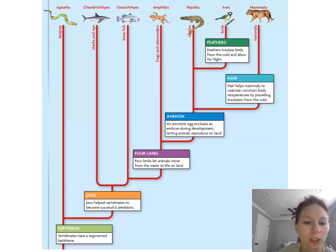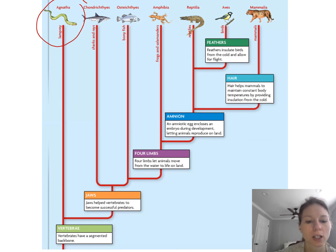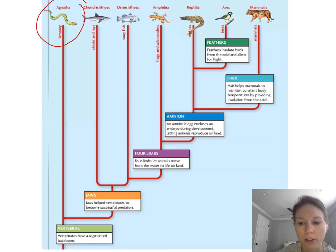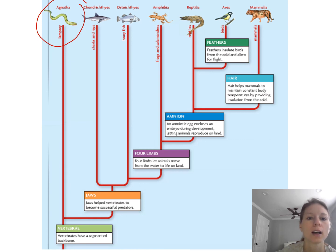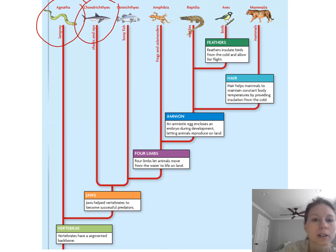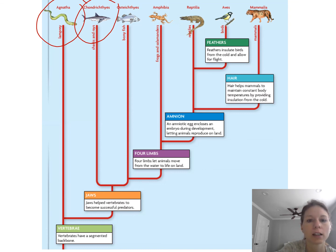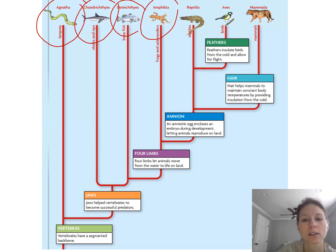We'll be referring to this phylogeny quite a bit as we move through all the different types of vertebrates — starting with the lamprey, which has a vertebral column but no jaws, then the jawed group with chondroichthyans and their cartilaginous skeleton, then osteichthyans, which gave rise to amphibians. In the next section we'll talk about amphibians, reptiles, birds, and mammals.